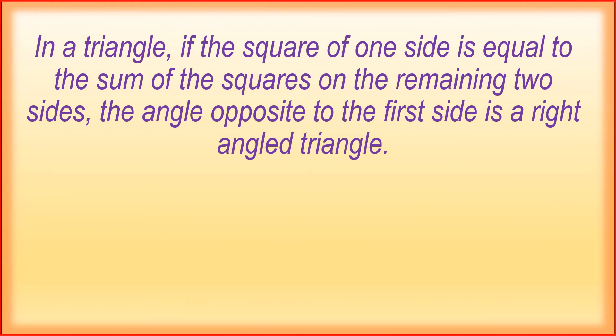In a triangle, if the square of one side is equal to the sum of the squares on the remaining two sides, then the angle opposite to the first side is a right angle.